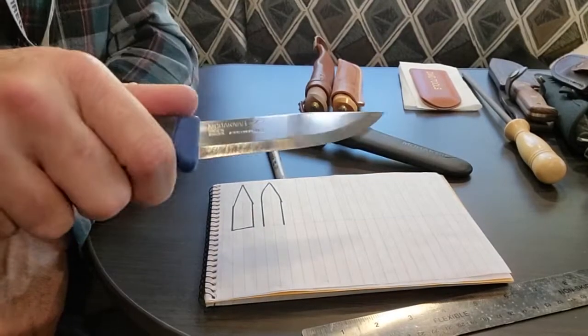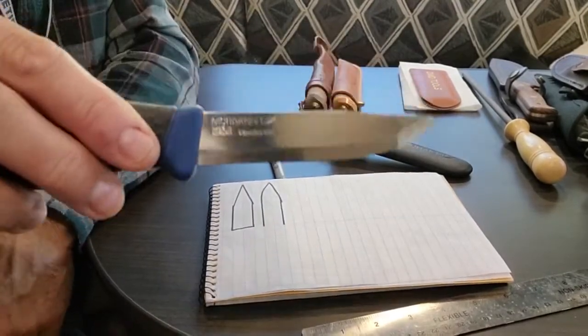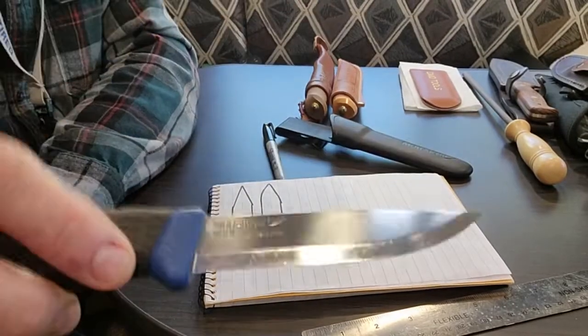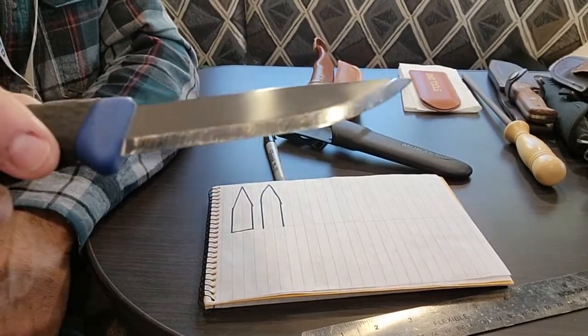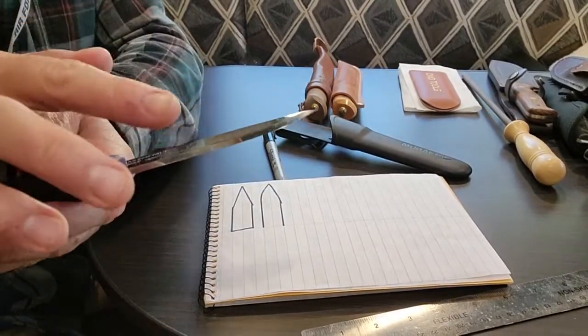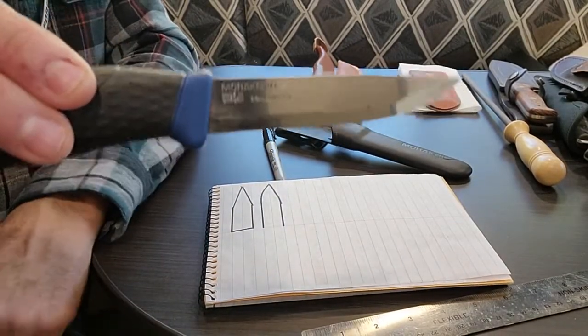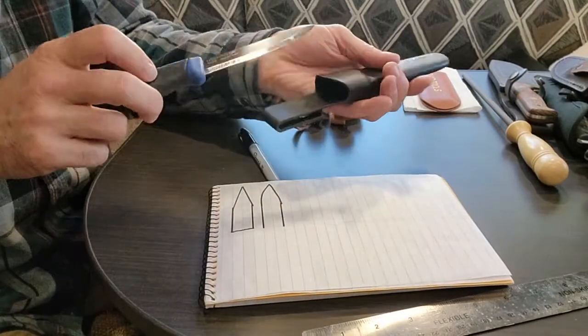Mora does that on their Companion, so get a Mora Companion, make some feather sticks, and you'll see the difference of what a Scandi edge will do. You may be struggling with some hollow grinds, some saber grinds. Just do that with a Mora Companion and you'll understand what can make excellent feather sticks.